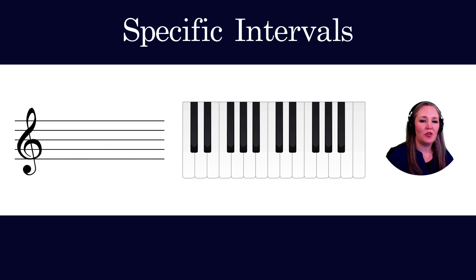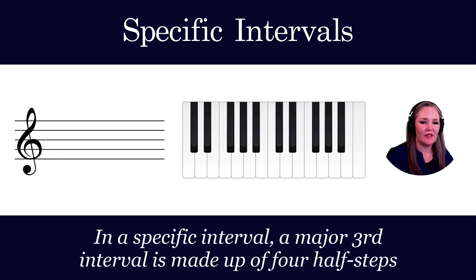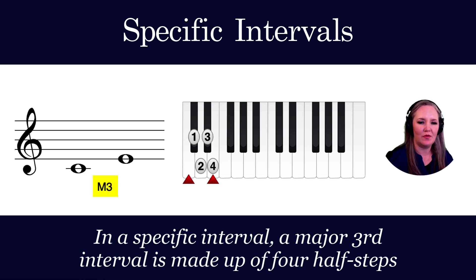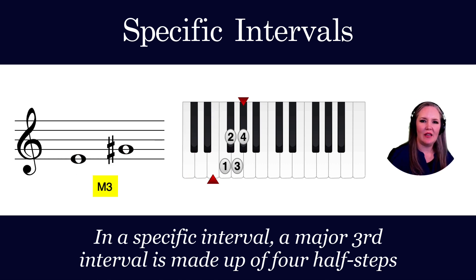A major third is made up of four half steps. So C to E is a major third — you can see those four half steps to get there. E to G-sharp is another example of a major third.